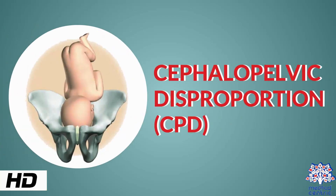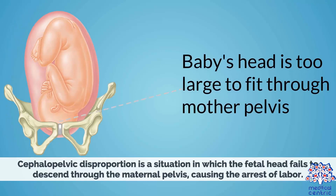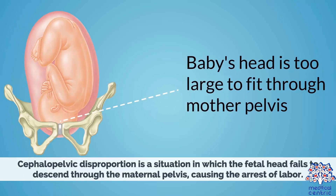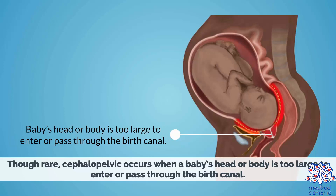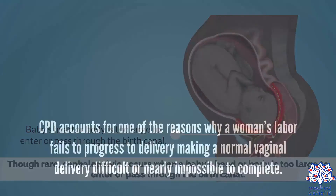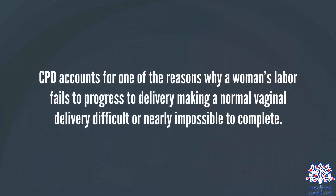Today's topic is cephalopelvic disproportion, or CPD. Cephalopelvic disproportion is a situation in which the fetal head fails to descend through the maternal pelvis, causing the arrest of labor. Though rare, CPD occurs when a baby's head or body is too large to enter or pass through the birth canal, and accounts for one of the reasons why a woman's labor fails to progress to delivery, making a normal vaginal delivery difficult or nearly impossible to complete.